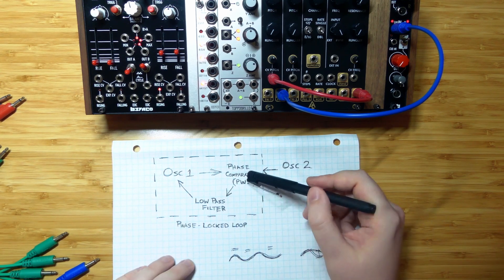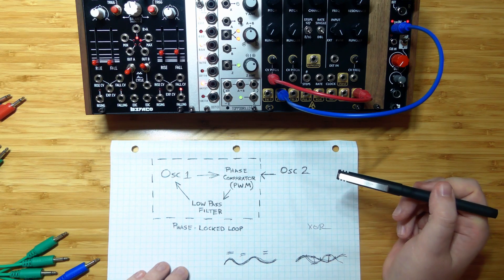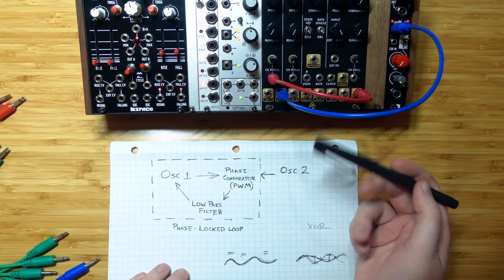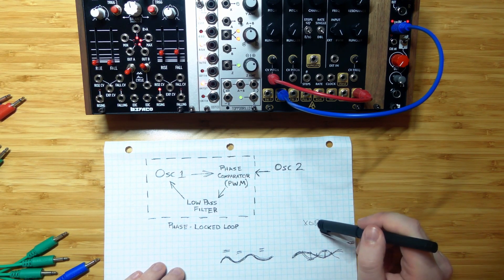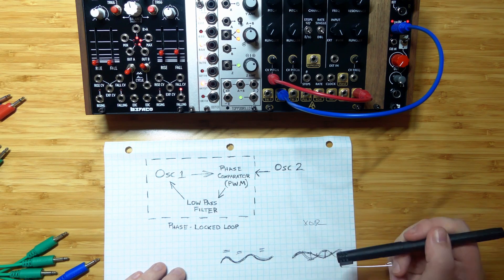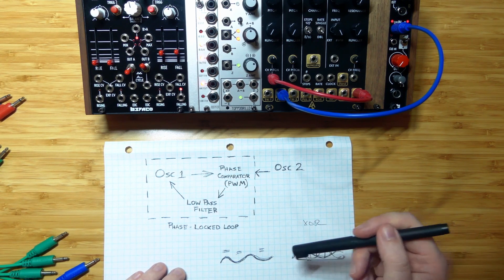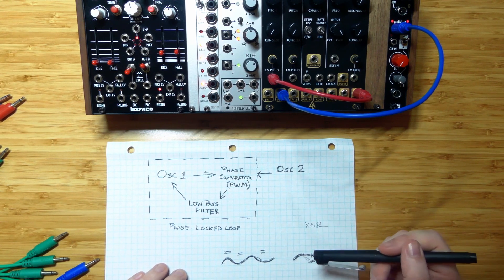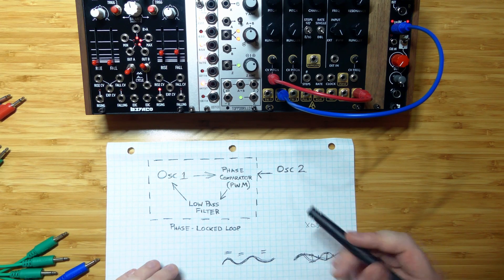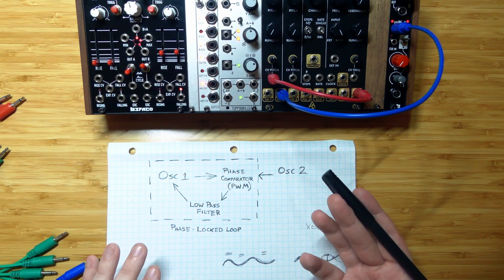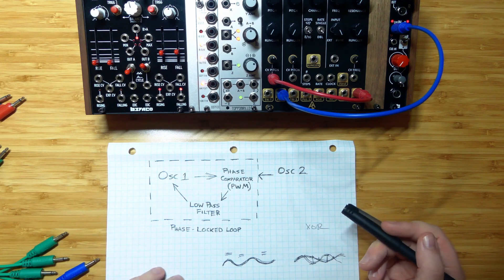There are a variety of ways to make this phase comparison. You can use a comparator, like on the Benjolin here. You can use an XOR logic signal. There are more complex ways of doing this. Phase-locked loops get used in all sorts of electronics — radios, scientific equipment — phase-locked loops are everywhere for signal processing.